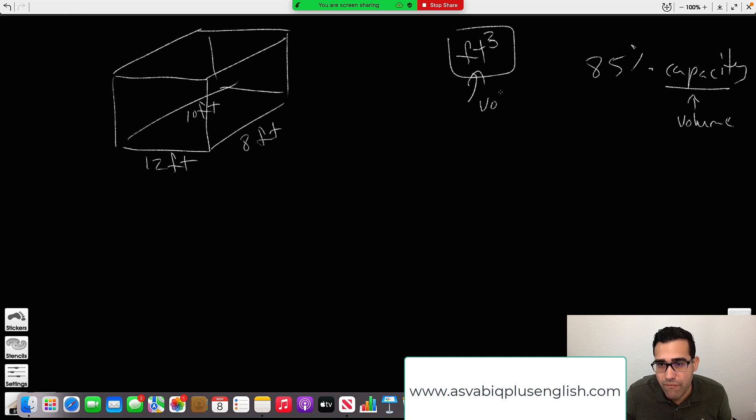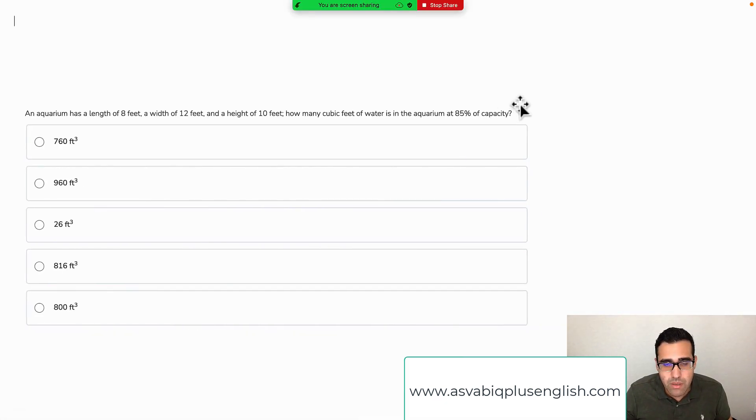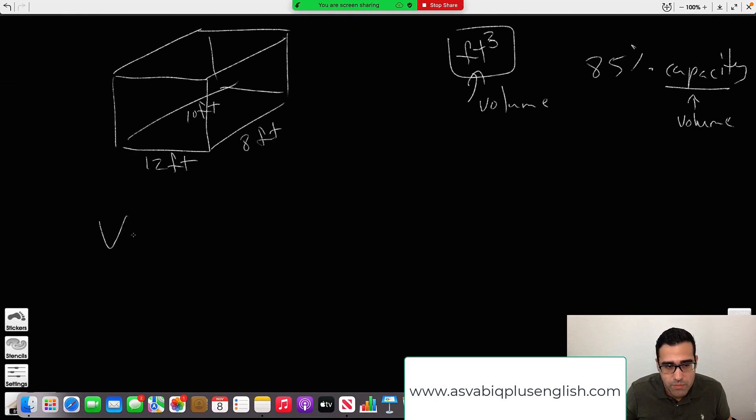So we know it's volume. Volume of a box, or a cube, or a rectangular prism is going to be length times width times height. So we have our length, our width, and our height.